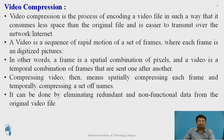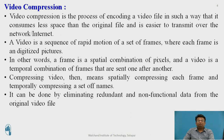Video is nothing but a sequence of rapid motion of a set of frames. Each frame is a digitized picture. Generally, video consists of 60 frames per second, so for a 3-minute video it will have 180 frames. Compression is necessary for the transmission of video over the internet or a network, and a compressed video will also occupy less memory in storage devices.